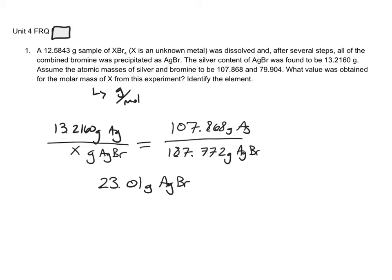Now if I subtract out the mass of the Ag from the AgBr, I'll get the mass of the bromine alone. So the answer is 9.7898 grams of Br. Now since all of the Br was precipitated, then that equals the mass of the Br in the original sample. And I was given the mass of the original sample as 12.5843 grams. So if I subtract this number out of 12.5843, I should be able to figure out the mass of the X.